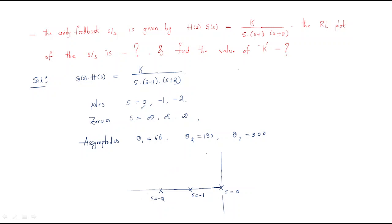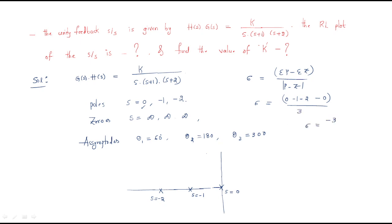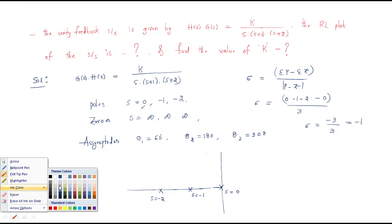We need to find the asymptotic centroid, which makes it easier to draw. The centroid formula is: summation of poles minus summation of zeros, divided by the number of poles minus zeros. The poles are 0, −1, and −2; zeros are none. So the centroid = (0 − 1 − 2) / (3 − 0) = −3/3 = −1.